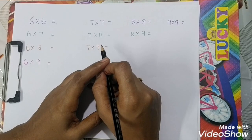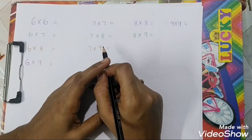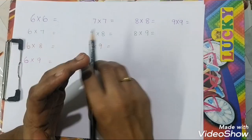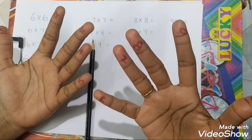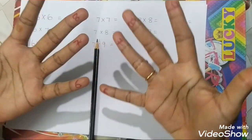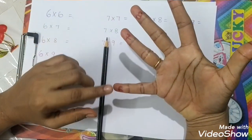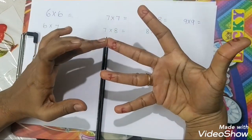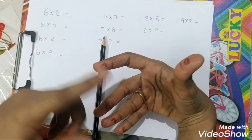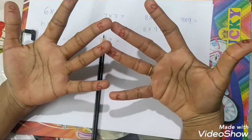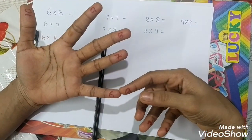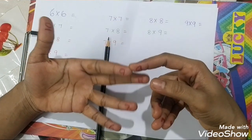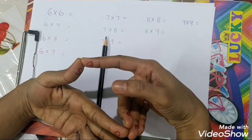Method 1: using our fingers. How to calculate? First, assign finger values. On each hand, the fingers represent 6, 7, 8, 9, and 10 — same on both hands: 6, 7, 8, 9, 10.